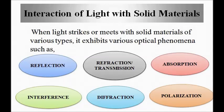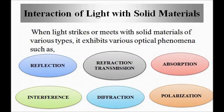We know that the optoelectronics system consists of several blocks from the sender side to the receiver. It includes optical sources such as LED and laser, then the electrical transmitter or modulator, then the optical fiber cable, and at the receiver side we have the photo detector and the demodulator. All these components are fabricated using semiconductor materials, so there will be an interaction of light with these semiconductor materials.